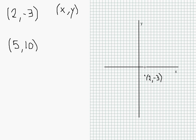1, 2, 3, 4, 5. And 10 units up because y is 10, positive 10. 1, 2, 3, 4, 5, 6, 7, 8, 9, 10. I hope I got that right. Hopefully I counted it correctly. So 5, 10.